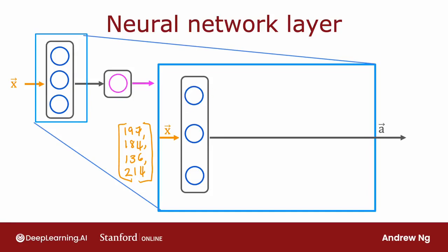Take this first neuron — it has two parameters w and b. To denote that this is the first hidden unit, I'm going to label these as w1 and b1. What it does is output some activation value a, which is g of w1...